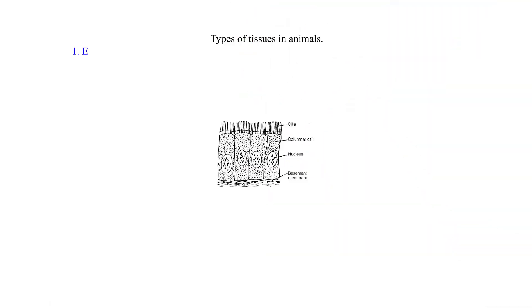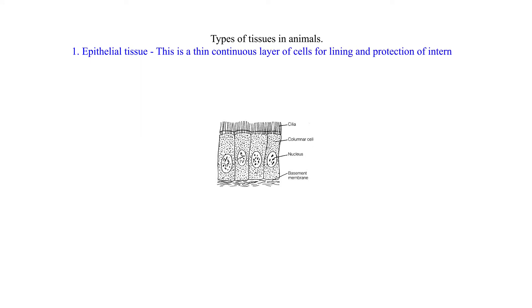Types of Tissues in Animals. 1. Epithelial Tissue: This is a thin continuous layer of cells for lining and protection of internal and external surfaces.